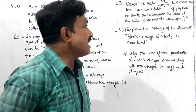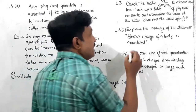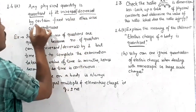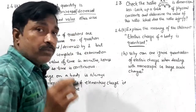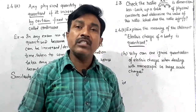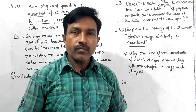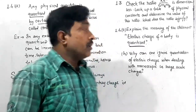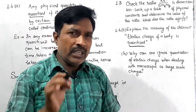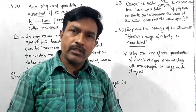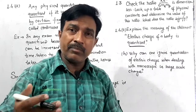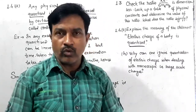Now for Question 1.4a: explain the meaning of the statement 'electric charge of a body is quantized.' Any physical quantity is quantized if it is increased or decreased by a certain fixed value. If a physical quantity changes only in fixed steps, it is quantized; otherwise it is continuous.